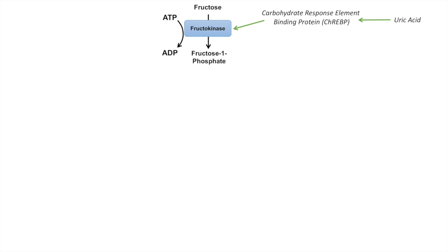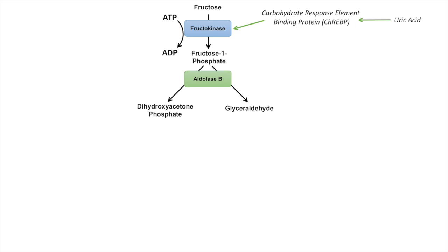Once we have fructose 1-phosphate, it gets cleaved by the enzyme aldolase B into dihydroxyacetone phosphate and glyceraldehyde. Dihydroxyacetone phosphate is the same as the one found in glycolysis. The glyceraldehyde, however, must go through another step using the enzyme triose kinase to form glyceraldehyde 3-phosphate, which is also a product of glycolysis.